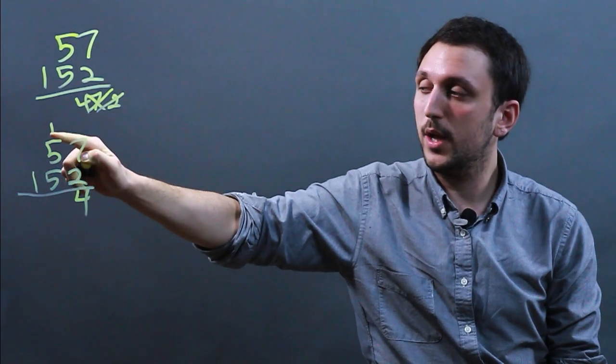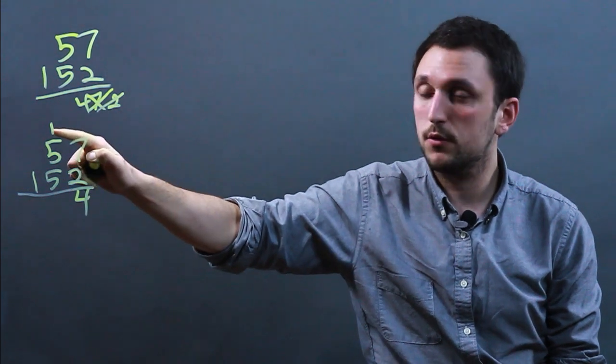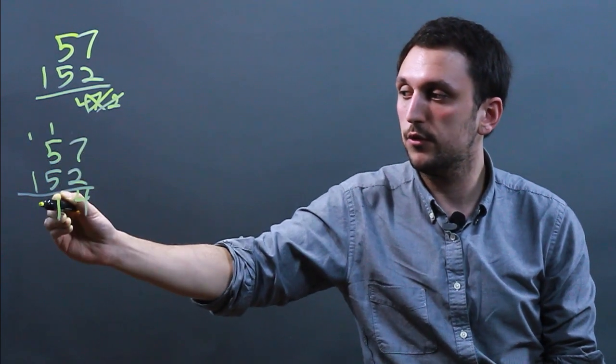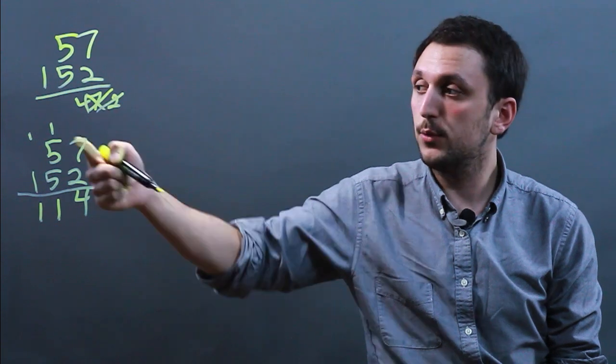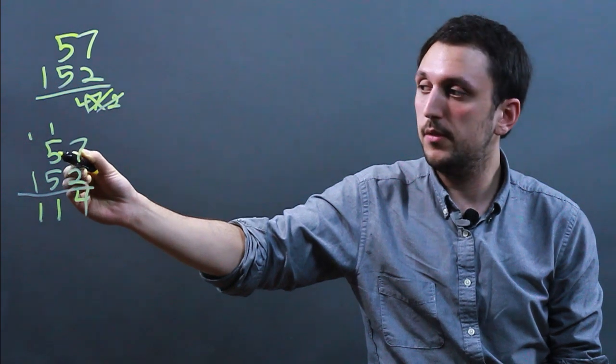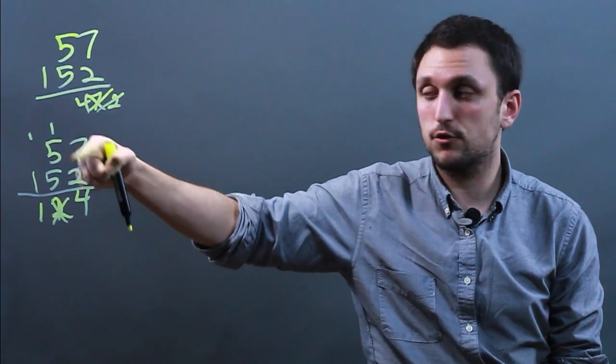Now the way that we carry is we say 5 times 2 is 10 plus 1 is 11. So we put a 1 here and then we carry. So it would just be 114. If you carry wrong, maybe you say 1 plus 5 is 6, and then you do 6 times 2, which gives you 12, and that's incorrect. So make sure you carry right.